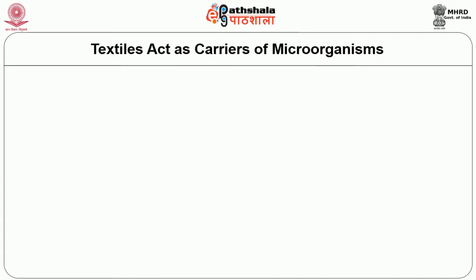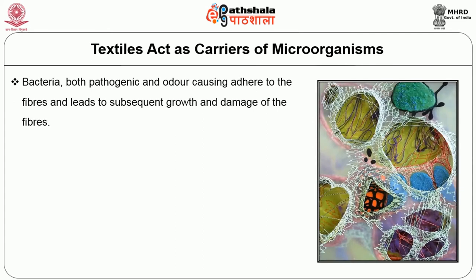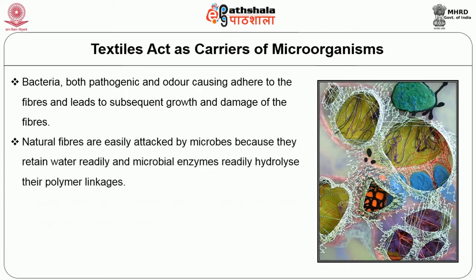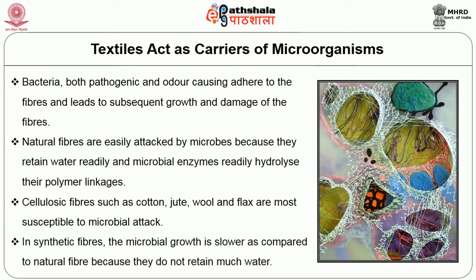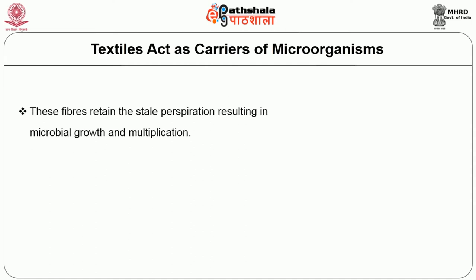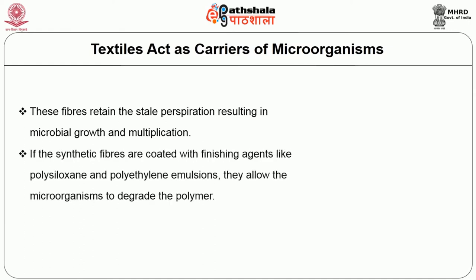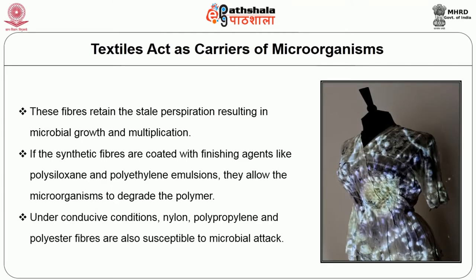Now let us see how textiles act as carriers of microorganisms. Bacteria, both pathogenic and odor causing, adhere to the fibers and lead to subsequent growth and damage. Natural fibers are easily attacked by microbes because they retain water readily and microbial enzymes readily hydrolyze their polymer linkages. Cellulosic fibers such as cotton, jute, wool and flax are more susceptible to microbial attack. In synthetic fibers, microbial growth is slower because they do not retain much water, but they retain stale perspiration resulting in microbial growth. If synthetic fibers are coated with finishing agents like polysiloxane and polyethylene emulsions, they allow microorganisms to degrade the polymer. Under conducive conditions, nylon, polypropylene and polyester fibers are also susceptible to microbial attack.